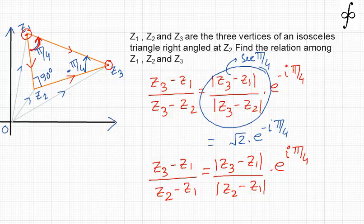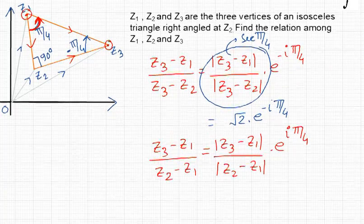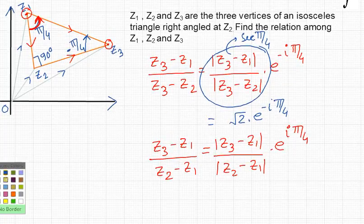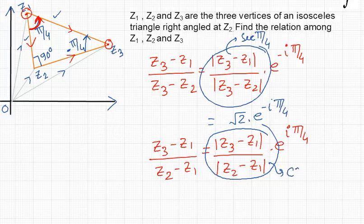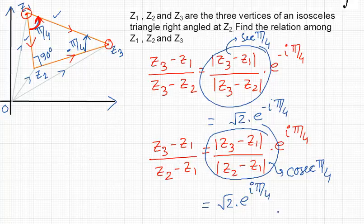The angle of rotation is anticlockwise, so it is taken as positive. The quantity |Z3 − Z1| / |Z2 − Z1| is the length of the hypotenuse divided by the length of the perpendicular, which equals cosec(π/4). Since cosec(π/4) = √2, this gives us √2 · e^(iπ/4). Call this Equation 2.